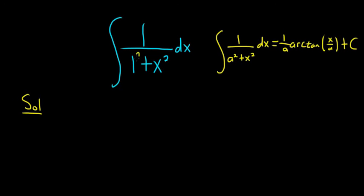So here we're going to think of 1 as 1 squared. So using the formula directly, our answer will be 1 over a, so a is 1, arctan of x over a, so x over 1 plus c. So this is just equal to arctan of x plus c.